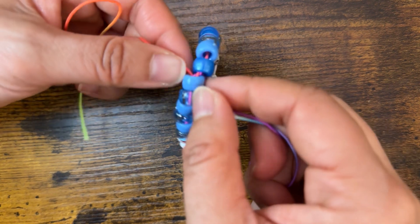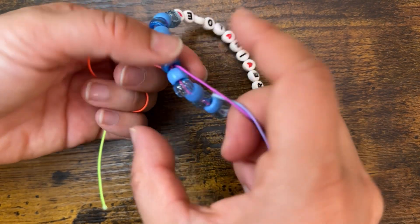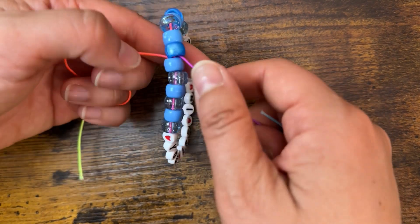You want to pull it tight enough so that everything comes together, but not so tight that it starts bunching like this. You just want to loosen it a little bit.